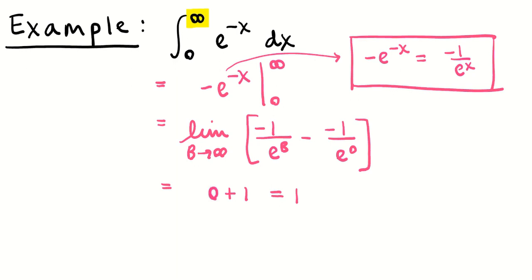The antiderivative was negative e to the negative x — accounting for the chain rule — and letting the upper bound run towards infinity. As b went towards infinity, negative 1 over e to the b goes towards 0 because the denominator is growing and the numerator stays constant. Plugging in 0 gives negative 1, so I got 0 minus negative 1, which equals 1. Again, going back into fraction form before plugging in bounds was the important step.